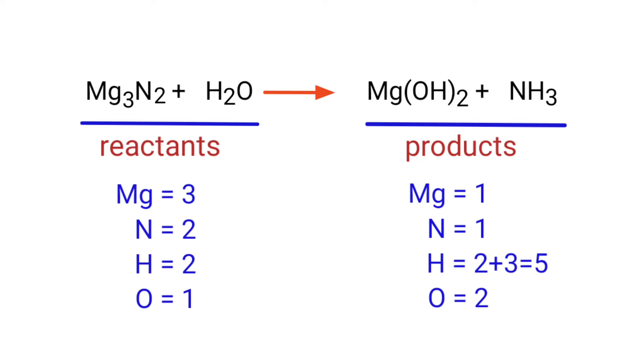The number of atoms are not balanced on both sides. To balance the chemical equation we need to make use of coefficients. A coefficient is a number that we place in front of a chemical formula.